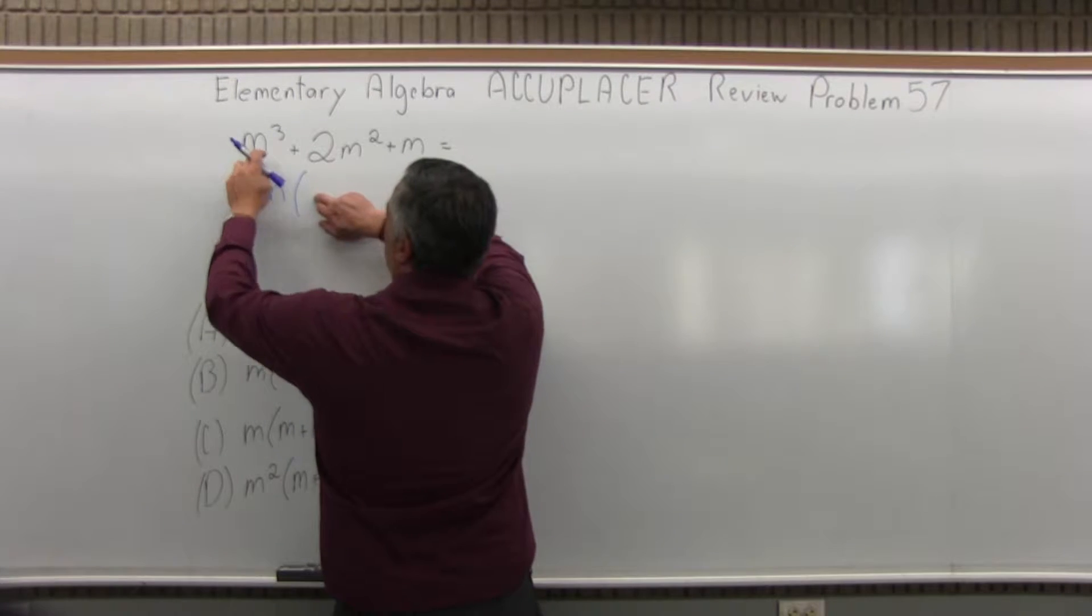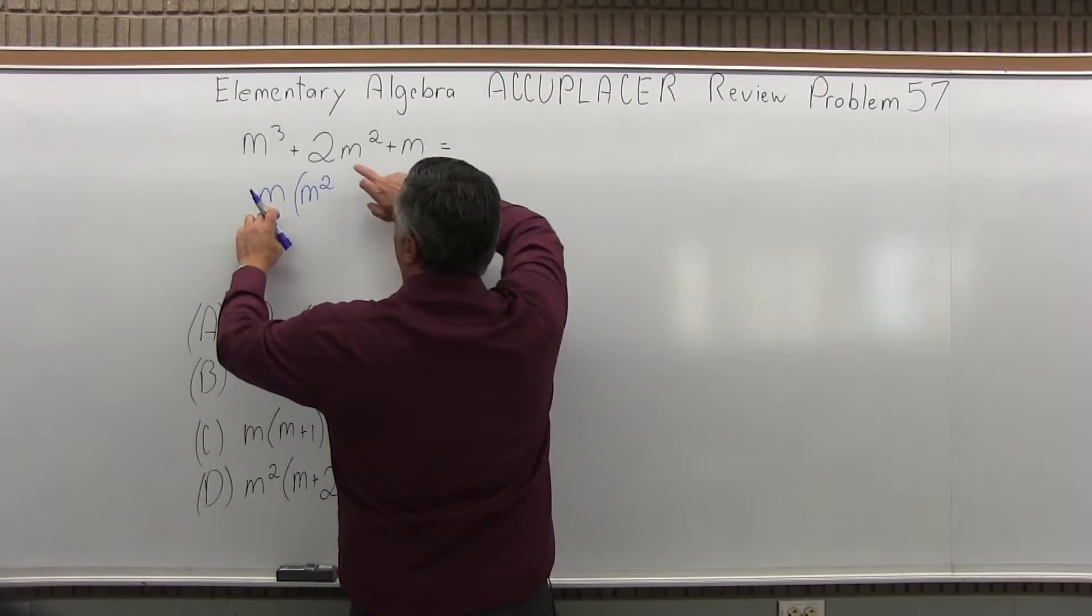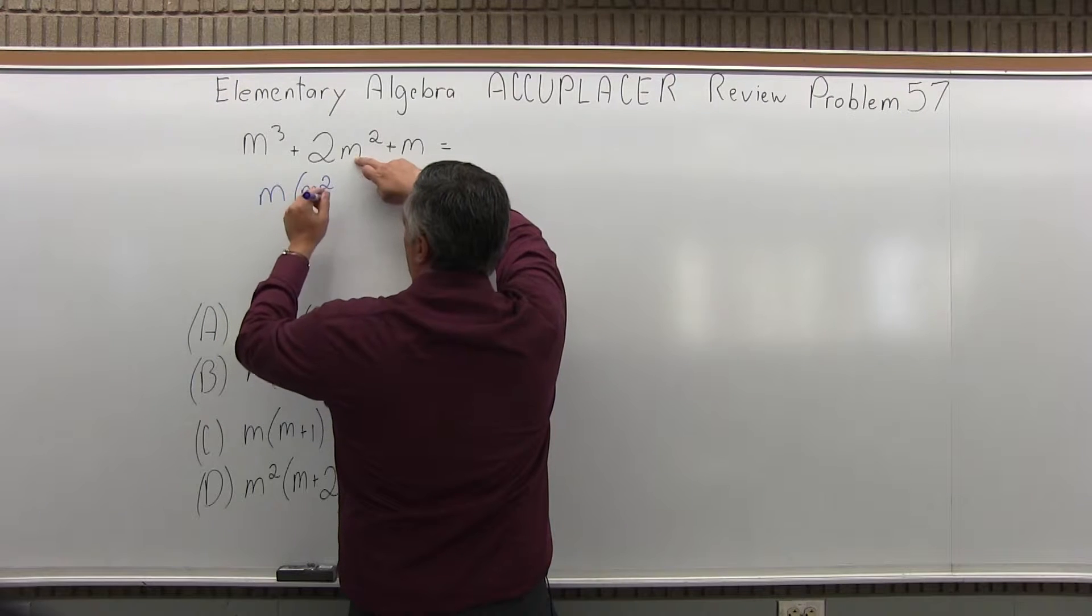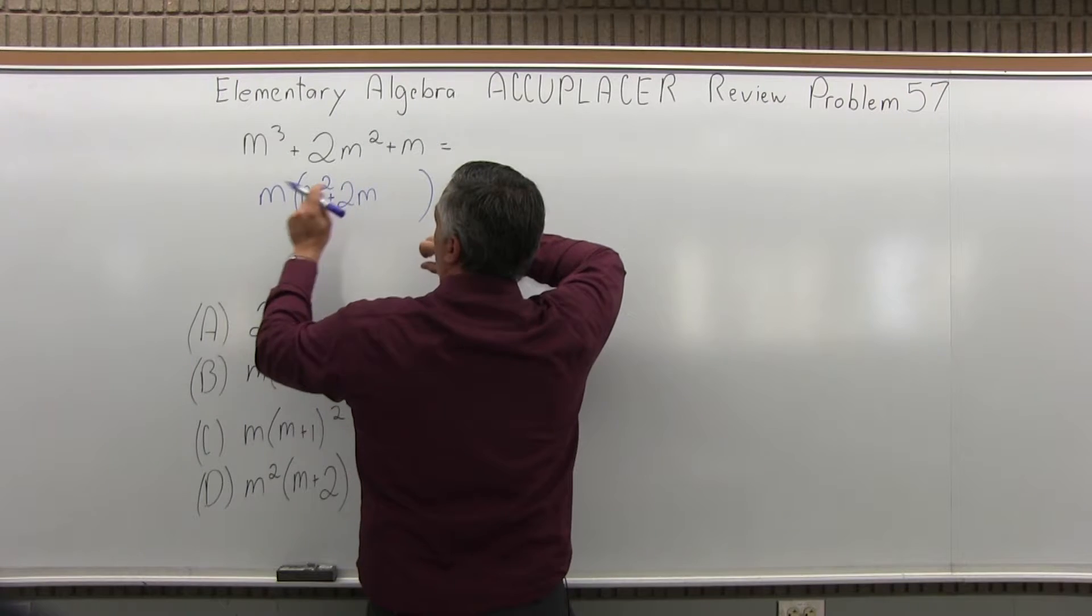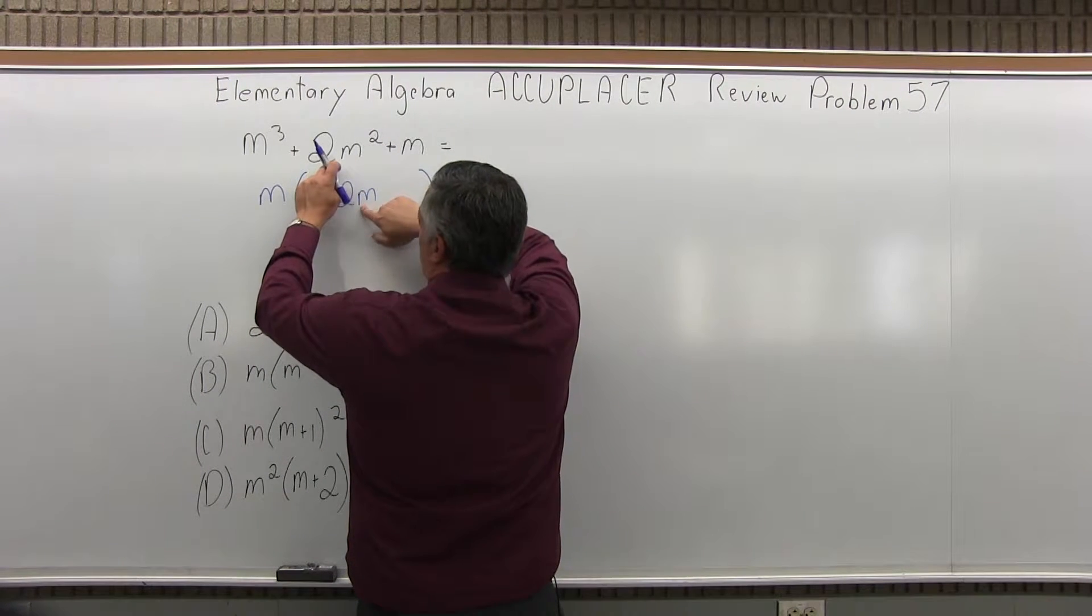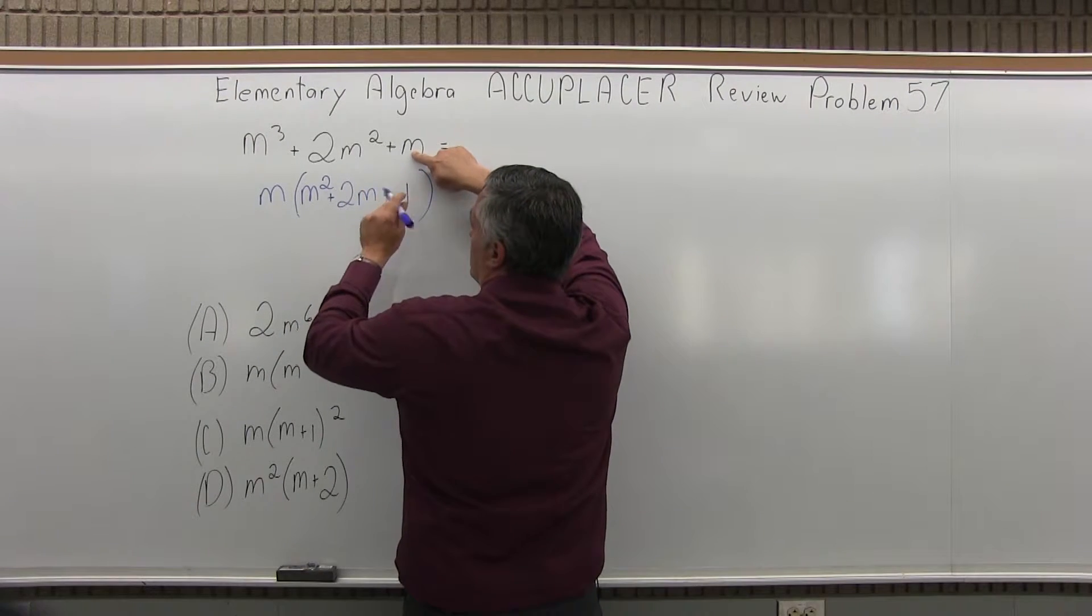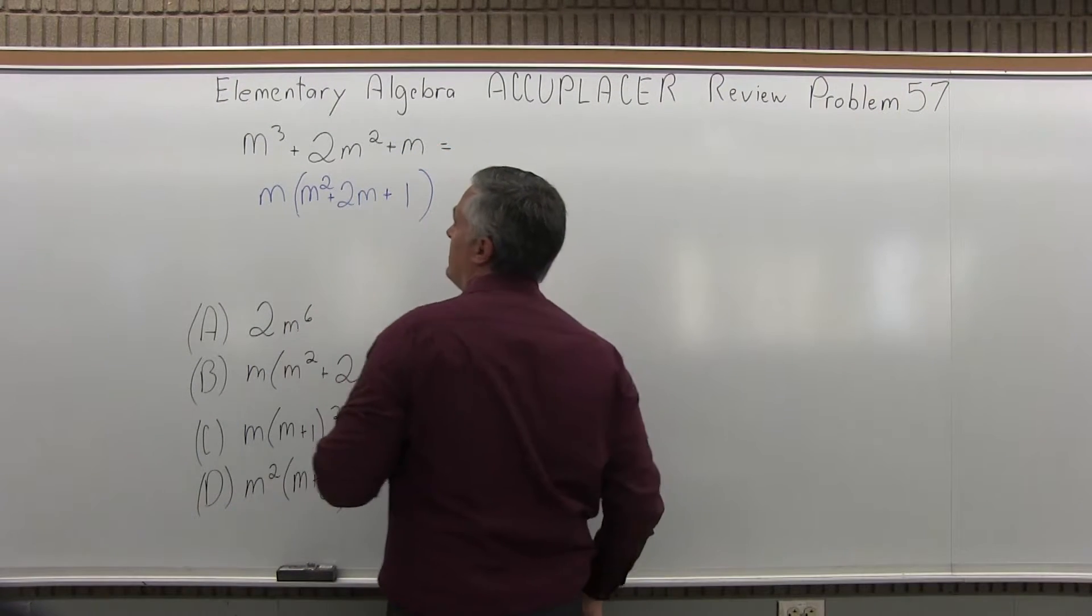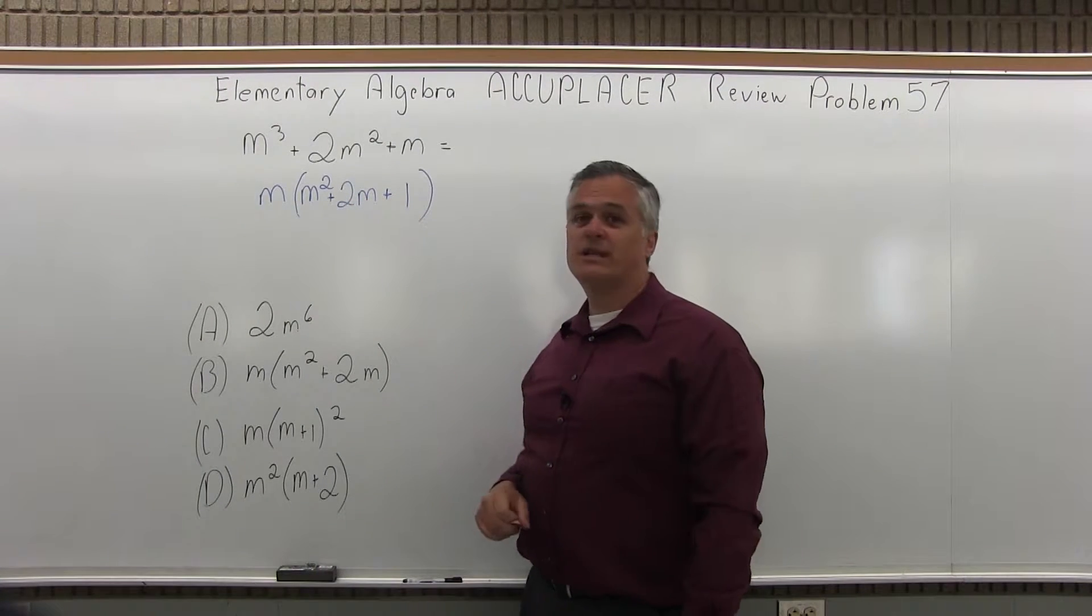And now m times something is m to the third. That would be m squared. And then m times something is 2m squared. Well I'll need the 2 and it's positive and an m to the first. So m times 2m is 2m squared. And then finally m times something is m, well times m times 1. Notice the sign, it's positive. So I have m in front of the parentheses, m squared plus 2m plus 1 inside the parentheses.